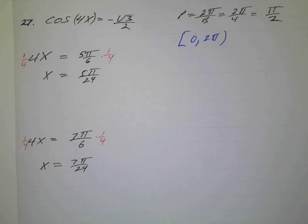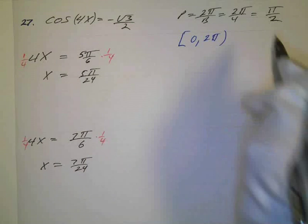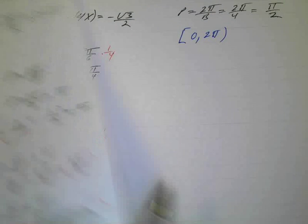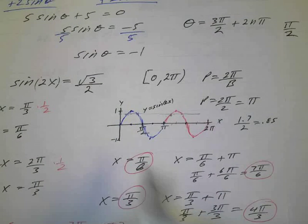But remember, this is periodic, so we just have to multiply a period. Each period is going to repeat itself. Now, the period is π over 2. But don't multiply, sorry. We have to add π over 2 to this to get the next possible answer. In other words, again, if you look at this, this was just a sine.